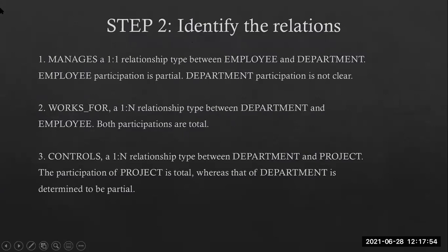So identify the relationships. There are cardinality ratios like one-to-one relationship — for example, one person has one Aadhaar card number, or one person holds one passport number. Also, one student has only one university number. That is a one-to-one relationship.